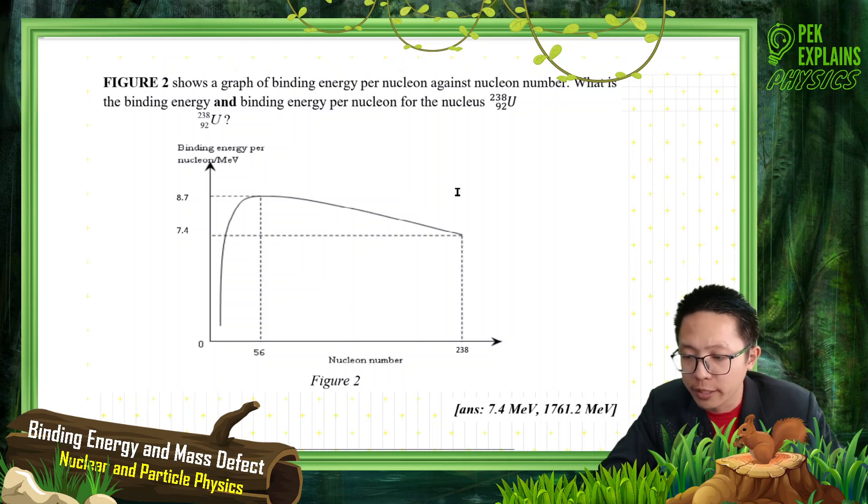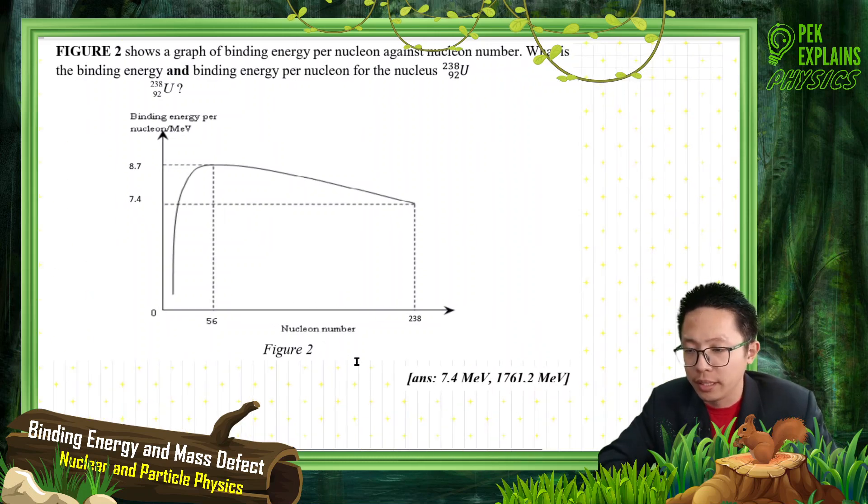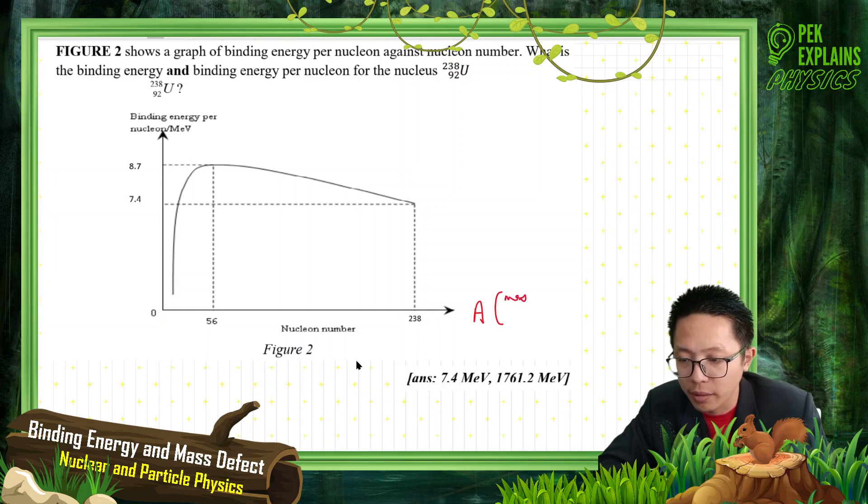Remember, you must know what axis is this. This is nucleon number, the A. What is this? This is the nucleon number A or we call it the mass number, mass or nucleon number.